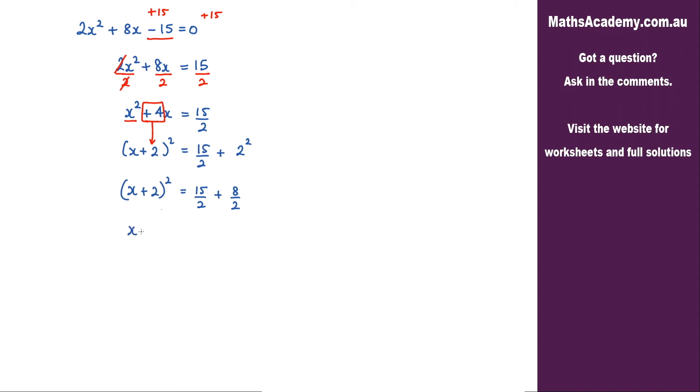So what we've got is x plus 2 squared is equal to, I can add these fractions together, that is 23 over 2.